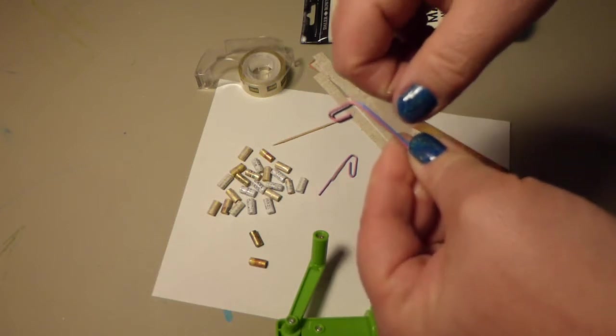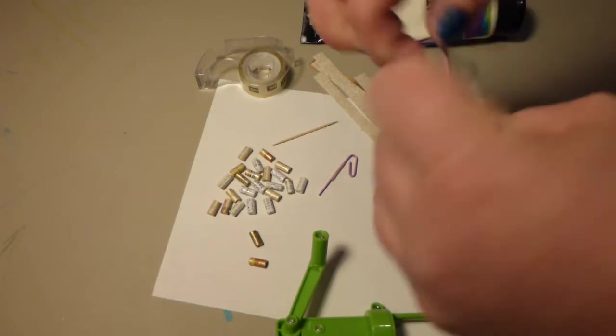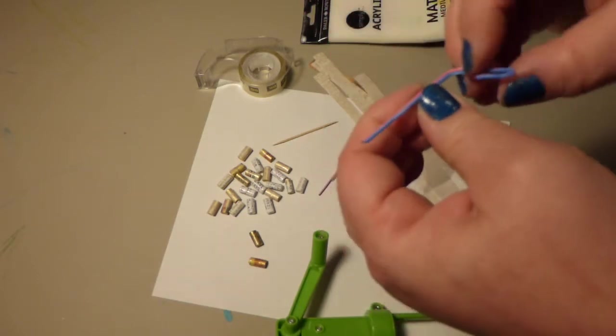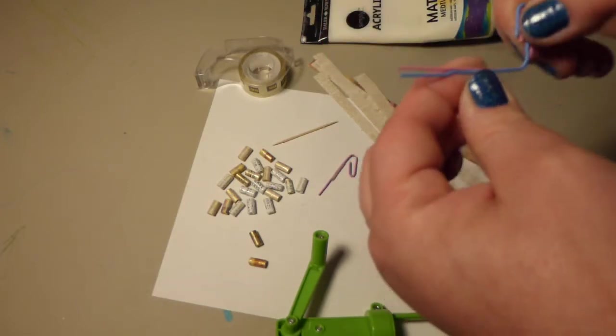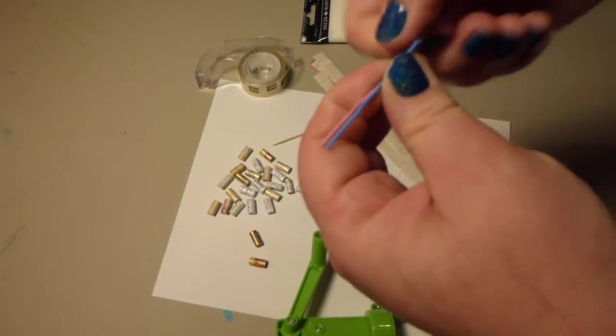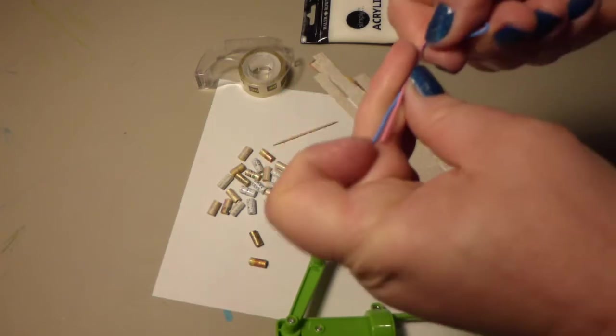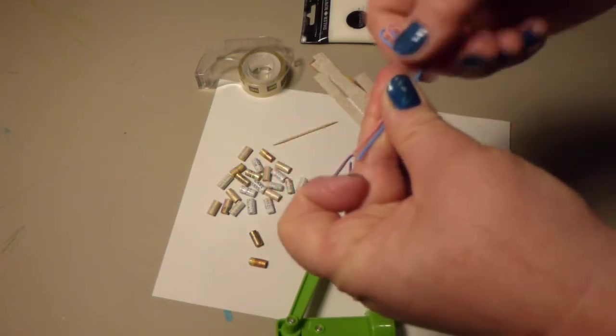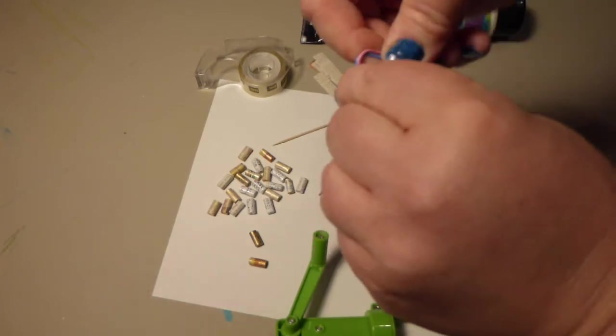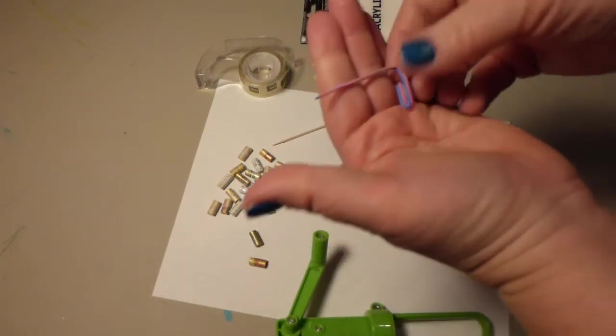Now I'm just going to take my tape and start winding it around to hold them in place. I want these to be side by side. Just wind the tape around the two paper clips. Form your handle in a comfortable position. I like to have it bent just like that.